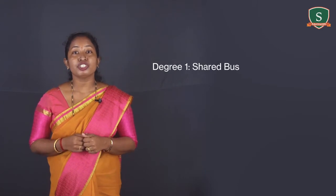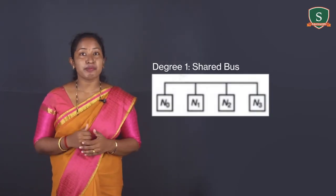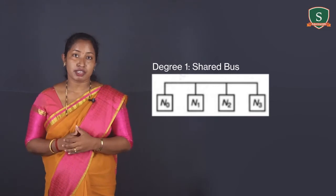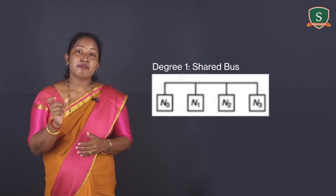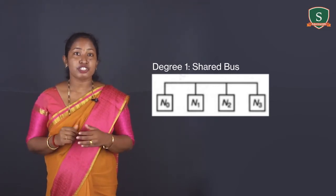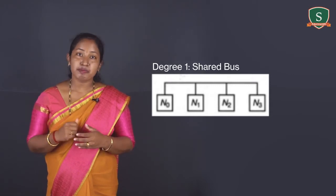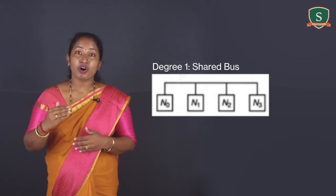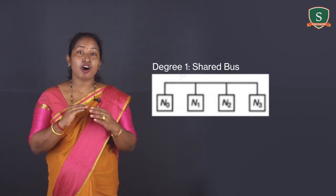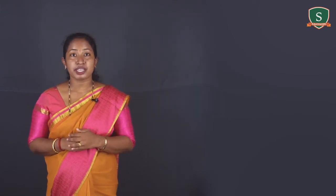Degree 1: Shared bus. As you can see in the figure, the shared bus is also called the common bus. It is the simplest type of static network. The shared bus has a degree of 1. In a shared bus architecture, all the nodes share a common communication link as shown in the figure.